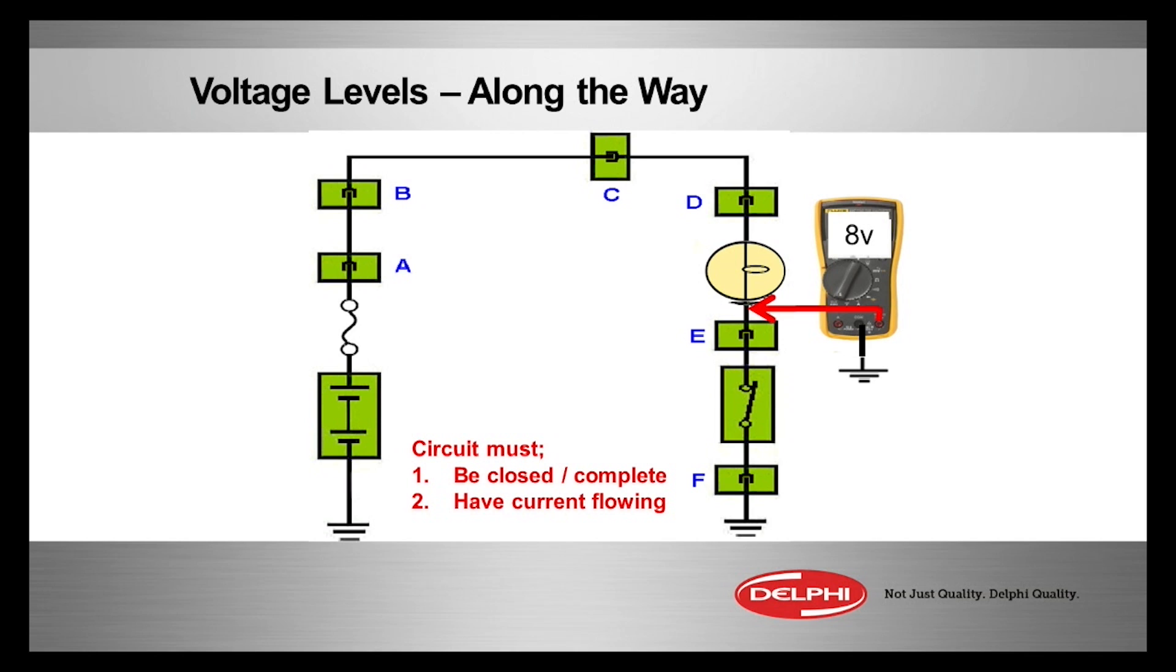So we look to see where that voltage drop started occurring. Now we're actually measuring between chassis ground and the ground at the load. It's eight volts. We move on downstream and we see eight volts basically at the switch input. So the switch is not the cause of the voltage drop.